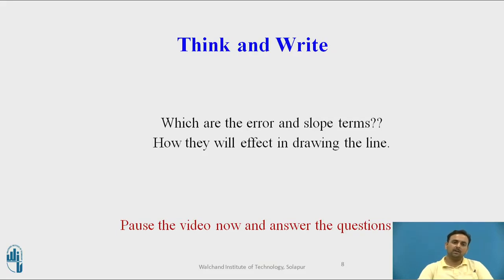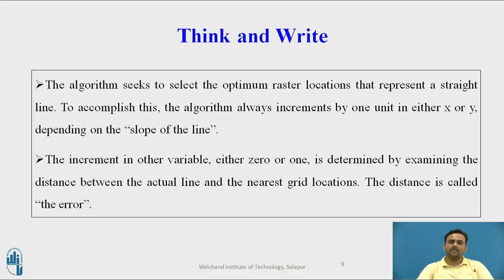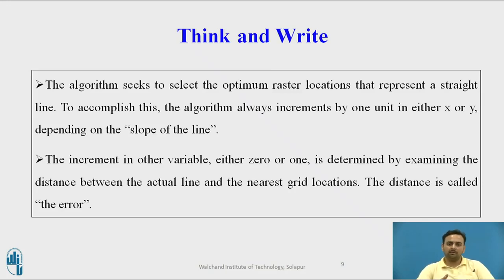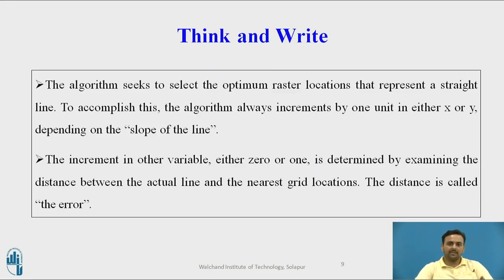There is one question: what are the terms error and slope and how do they affect drawing the line? The algorithm seeks to select the optimum raster location — the intermediate pixels which should help drawing the straight line. To implement this we have to increment the x or y value. Which value should be incremented is based on the slope of the line. And whether the other variable should be incremented by 0 or 1 is decided by the error term — the sign of the error bit will decide it — which is nothing but the distance between the actual line and the nearest grid location.